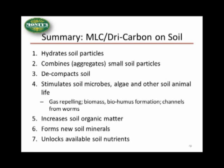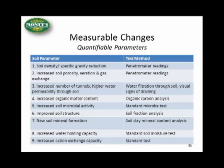It is important to note that these are not unfounded claims — every one of these soil parameters can be quantified through proven test methods. For example, soil density and specific gravity reduction, increased soil porosity, aeration, and gas exchange can be detected through penetrometer readings — simple readings that farmers and laymen can use. Increased number of tunnels and higher water permeability can be detected through water filtration through soil and visual signs of drainage. Increased organic matter content can be detected through organic carbon analysis.